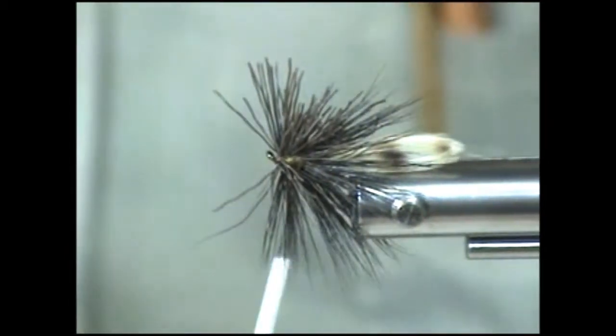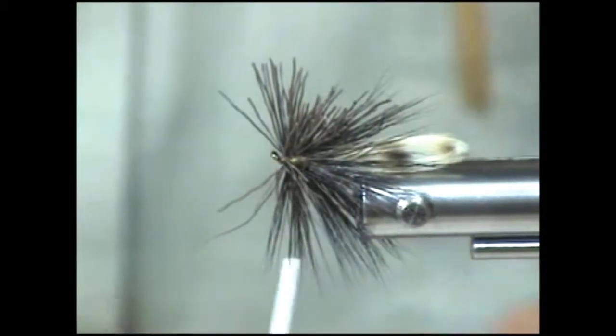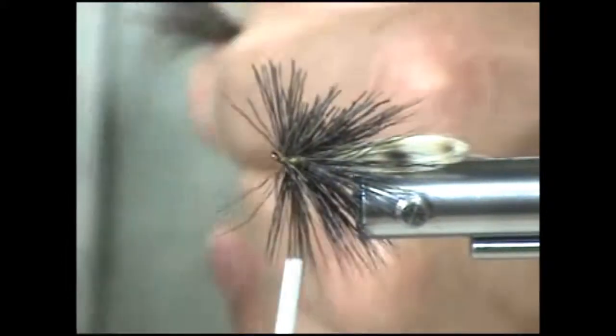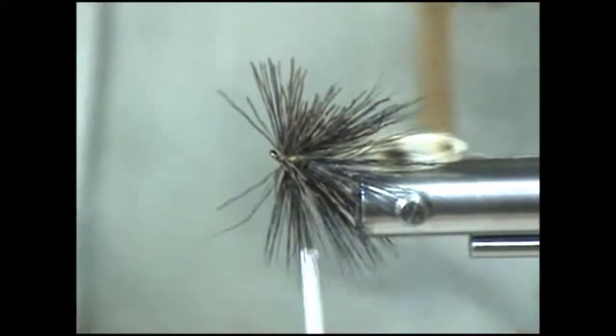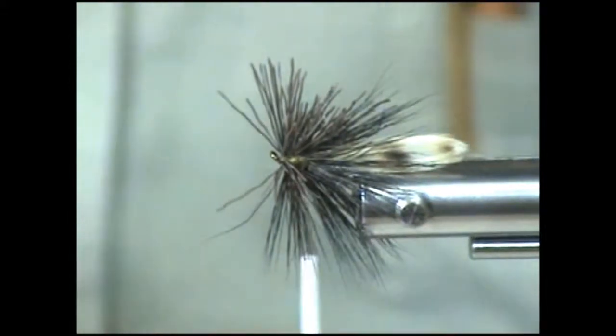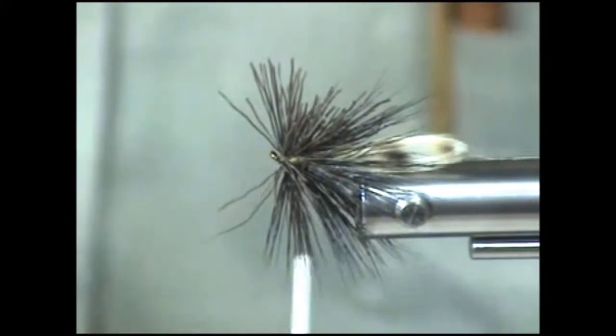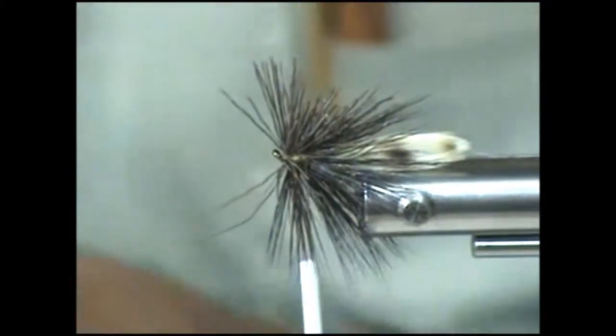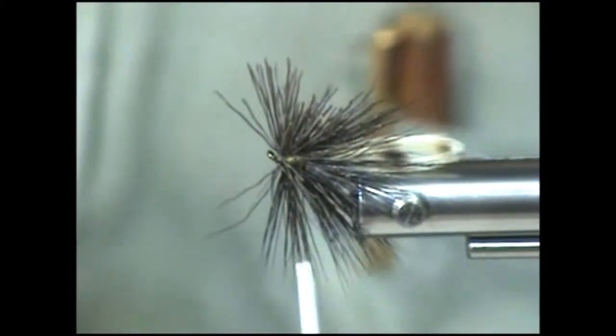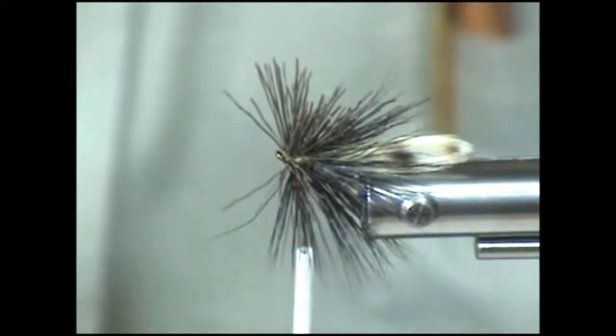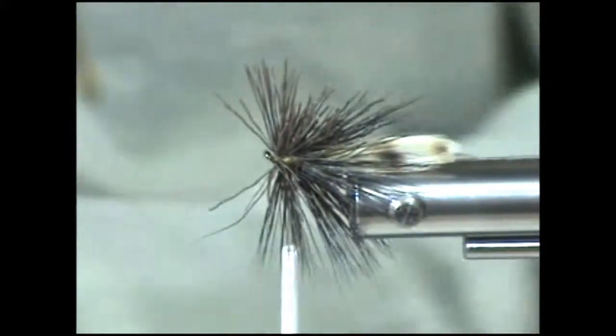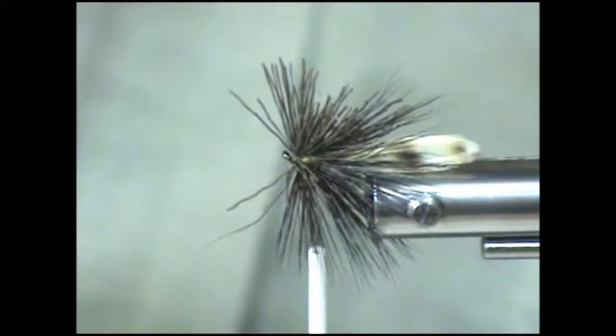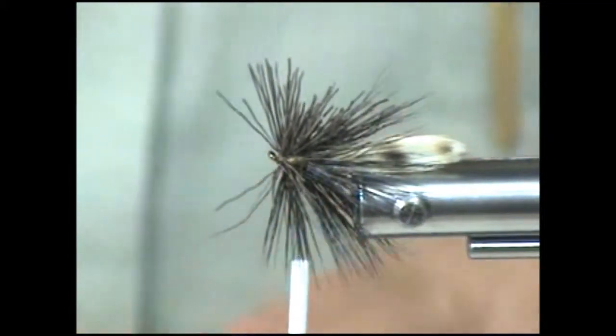Again, repeat the process - brush the under fur out. The brush that I'm using for that is just a nylon brush that you can get in any hardware store. I'll go ahead and feed that into the stacker, give it a couple of taps here, line up the tips.